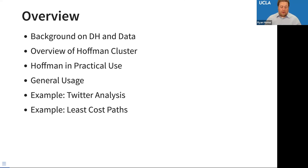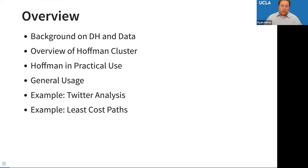I'll show you how to use Hoffman in practical terms for digital humanities, using two examples of projects I've worked on: one being an analysis of Twitter data, and another being an analysis of least cost pathing — finding ways to walk through really complex digital elevation models.